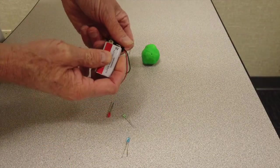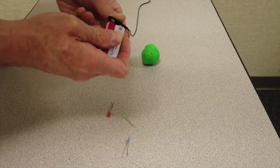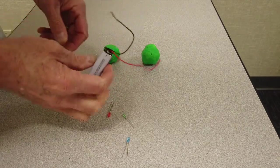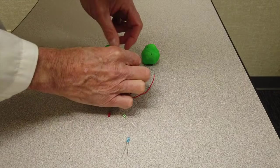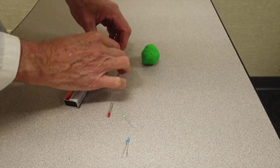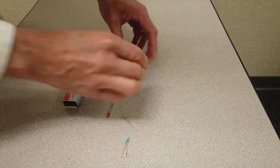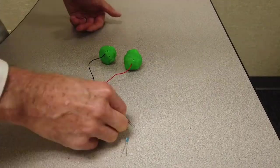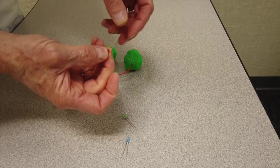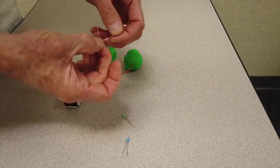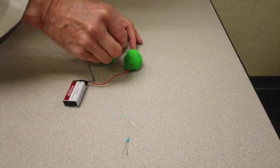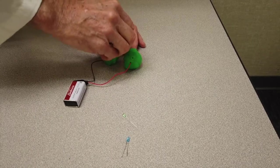Next they will attach the battery clip to the battery by simply snapping it into place. There's only one way it can go on. And they're going to put one wire into one of the spheres of dough and the other wire into the other one like that. Then they take one of the LEDs and they spread the two legs on it like that. And they plug one leg into each sphere of dough.